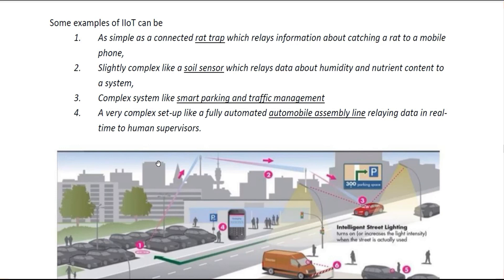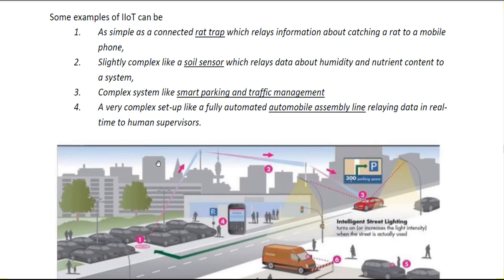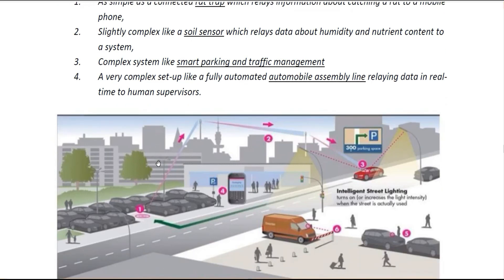IoT ranges from simple setups — like a rat trap that sends information about catching a rat to a mobile phone — to slightly more complex devices like a soil sensor, which relays data about humidity and nutrient content of soil to a connected system.